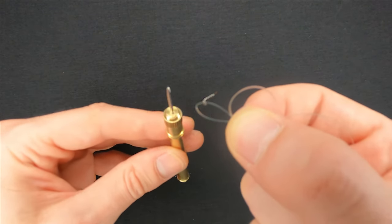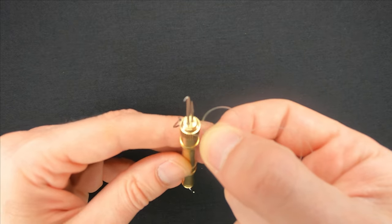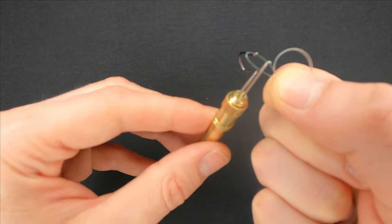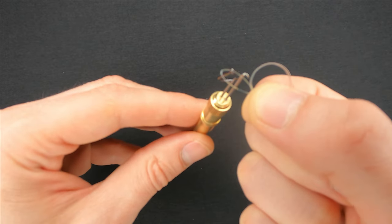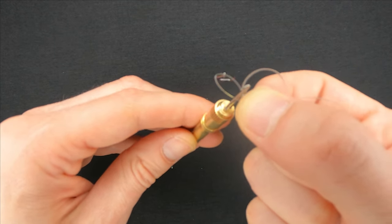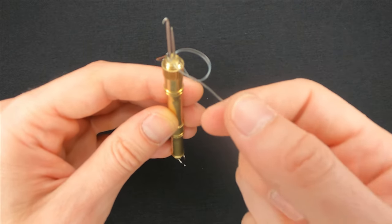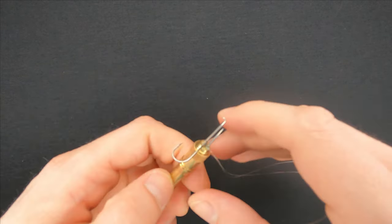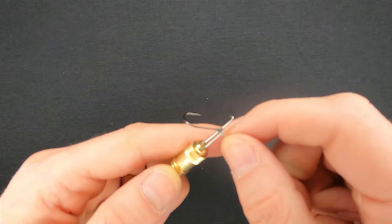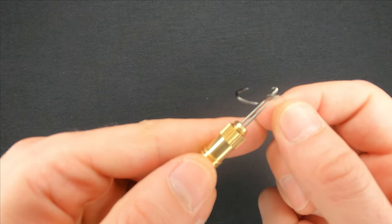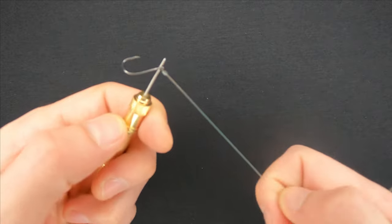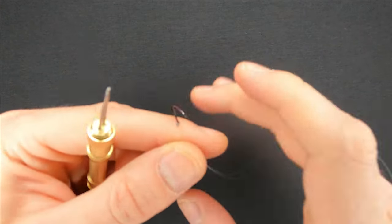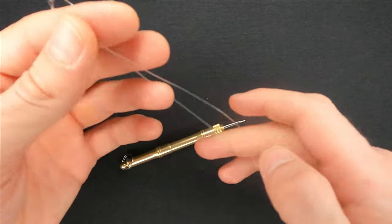Take the tool and place the single line loop with the hook on the longer needle and the double line loop on the shorter one. Pull the line to make the knots tight and remove the double line loop from the shorter needle. Pull the line one more time to tighten the knot and now you can remove it from the longer needle.